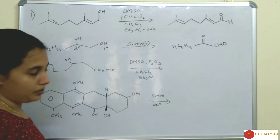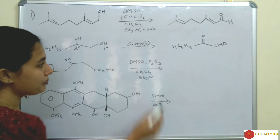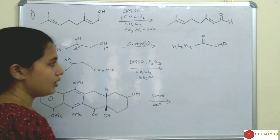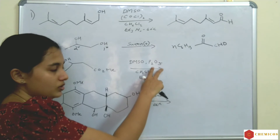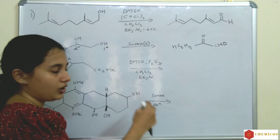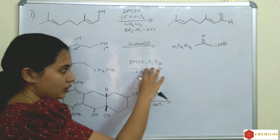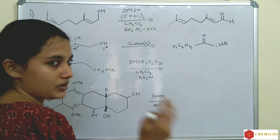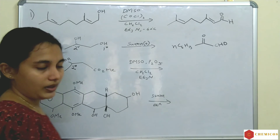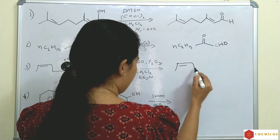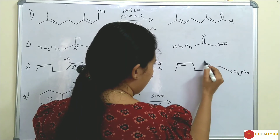In the third example, instead of oxalyl chloride, we use P₂O₅ — phosphorus pentoxide. If we are not satisfied with chlorinated byproducts, we can use P₂O₅ instead of oxalyl chloride. Here the OH is a secondary alcohol, so secondary alcohol is converted to ketone.